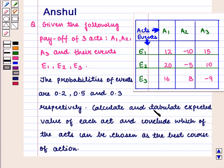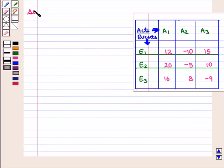Calculate and tabulate expected value of each act and conclude which of the acts can be chosen as the best course of action. Now let us start with the solution of the given question.